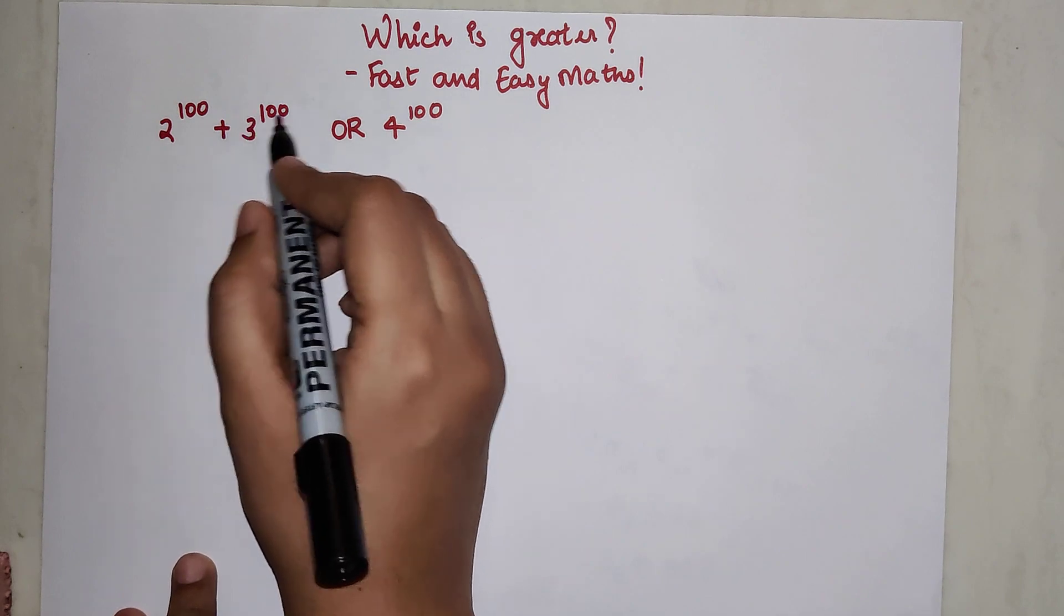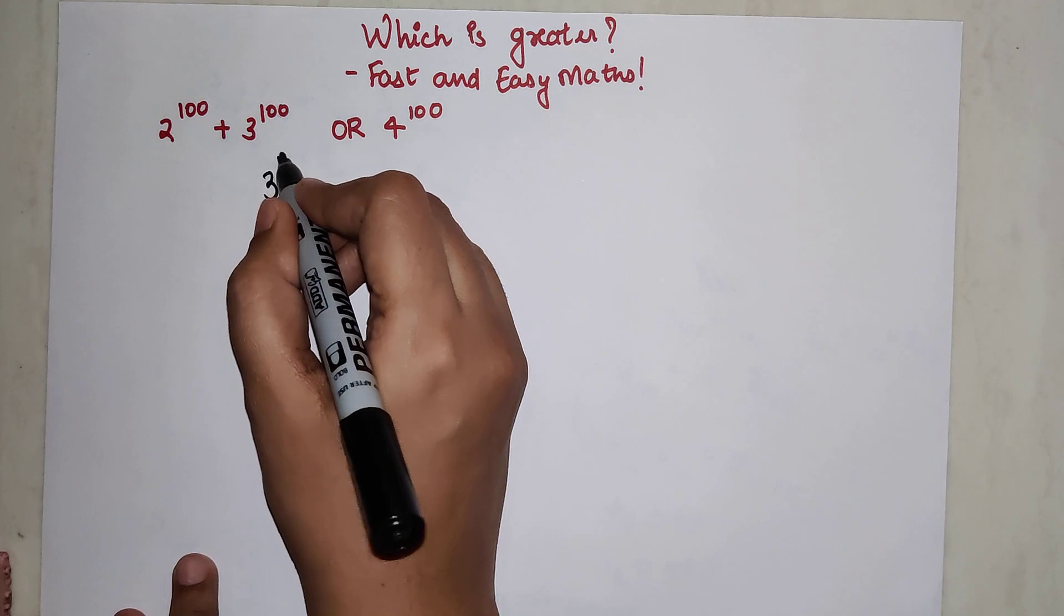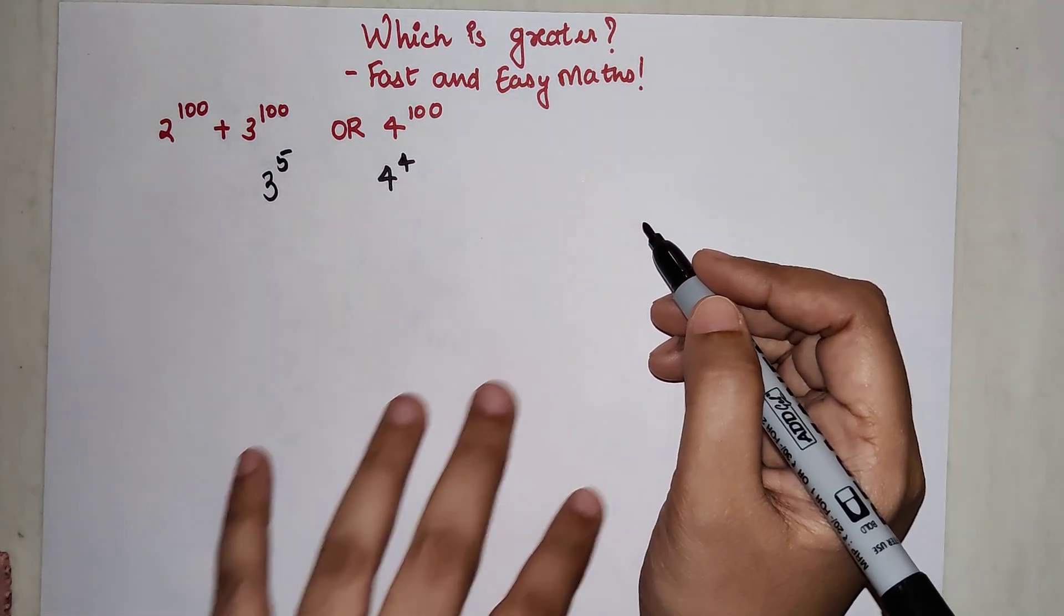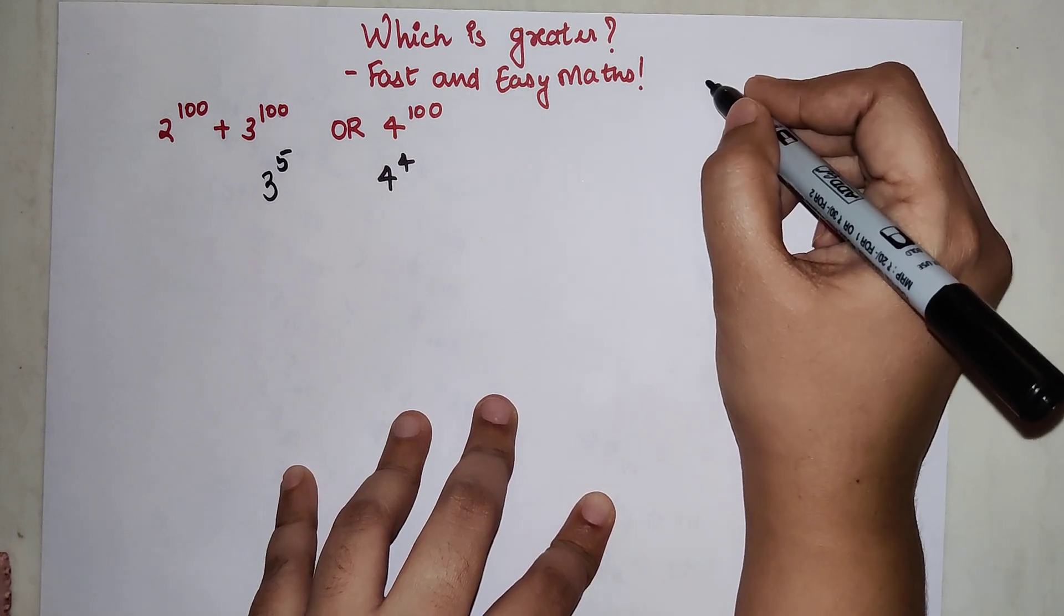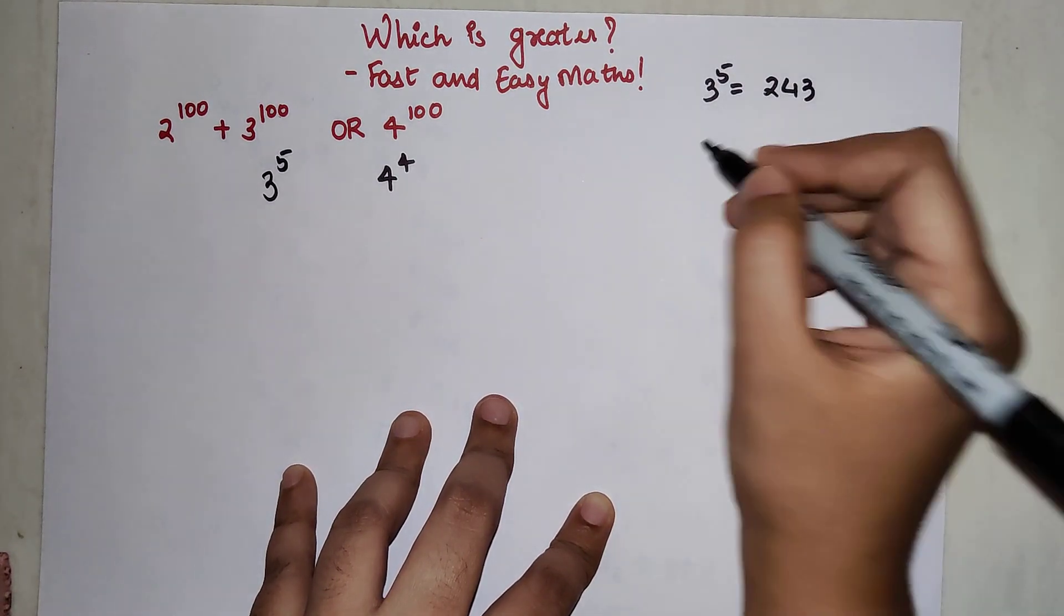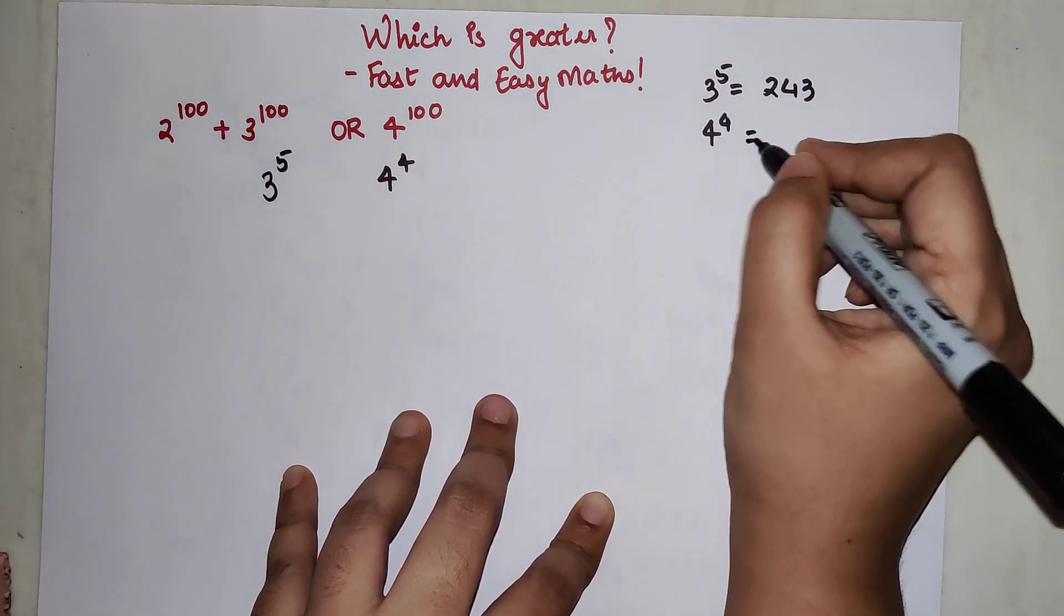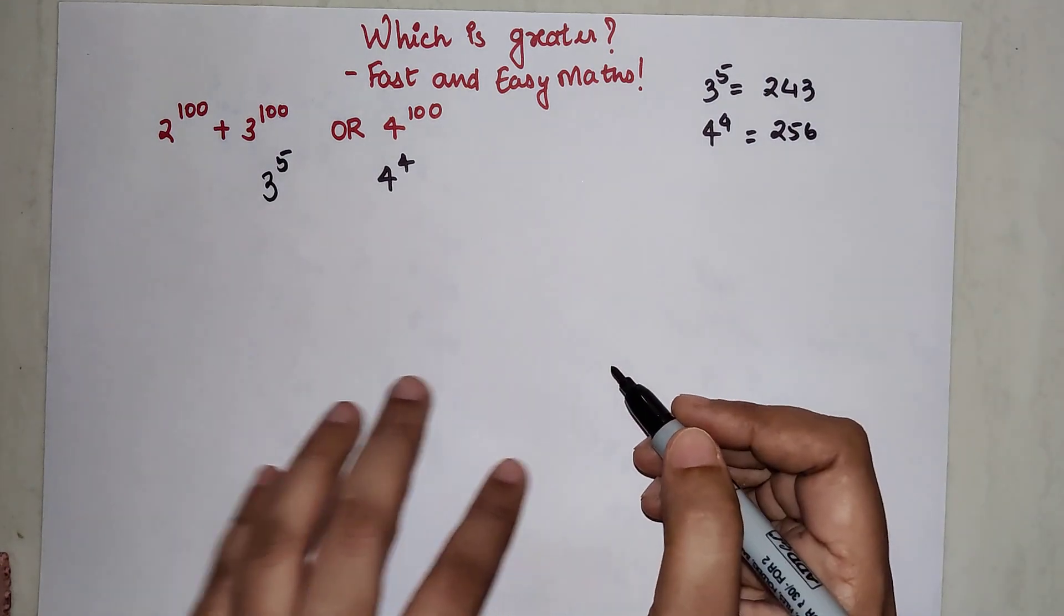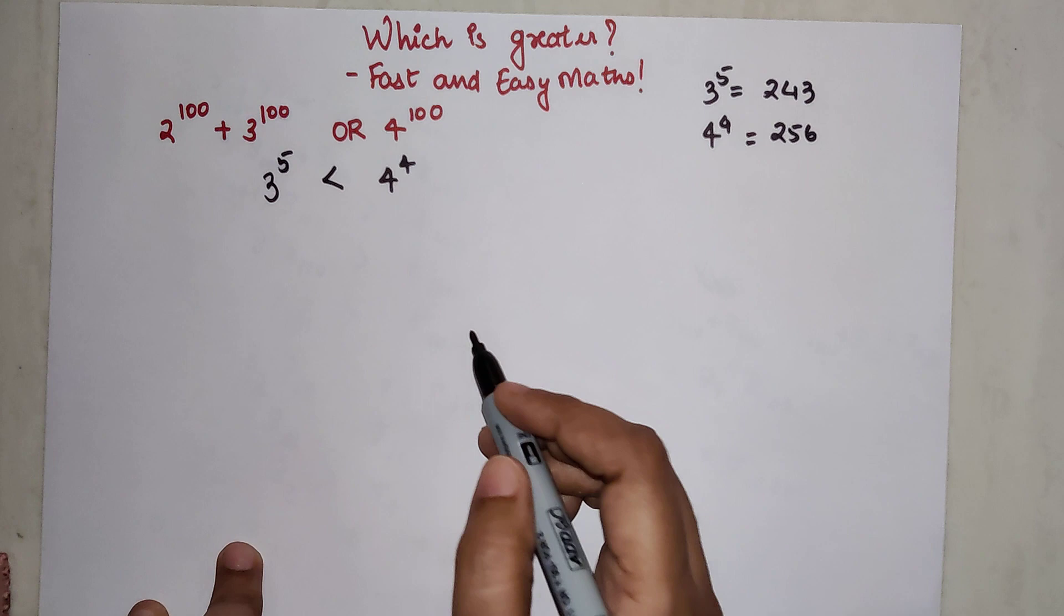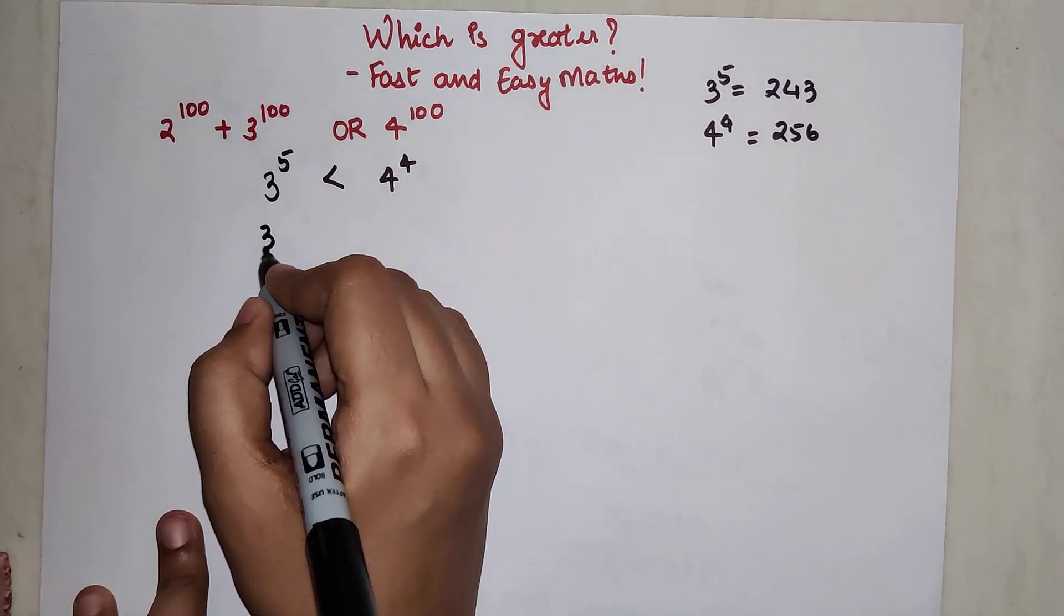Before beginning with this, let's try and write 3^5 and 4^4. 3^5 is nothing but 243 and 4^4 is nothing but 256. So between the two, I can say that 4^4 is greater.